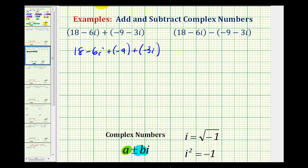Once we have it in this form, we just need to combine the real parts of the complex numbers and then combine the imaginary parts of the complex numbers. Since 18 plus negative 9 is 9, the real part is equal to 9.